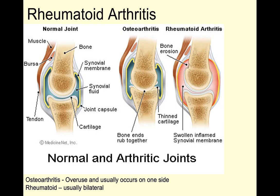Here's another example comparing a normal joint with osteoarthritis. Osteoarthritis is what we think about with just overuse — maybe you've been a football player, a soccer player, or a professional skier going through moguls. You're beating up that joint, destroying that cartilage, and eventually you start rubbing bone on bone, which creates a lot of friction.